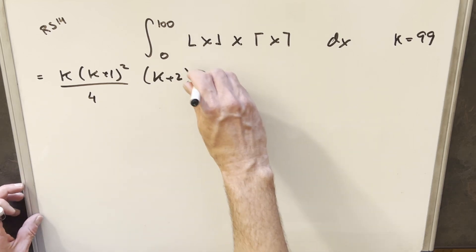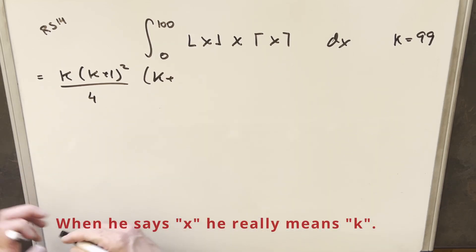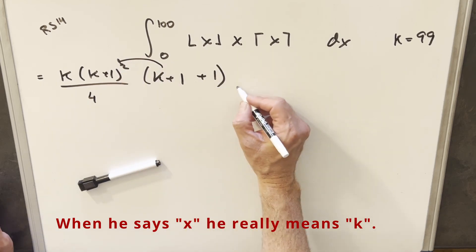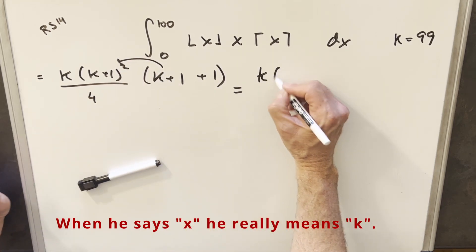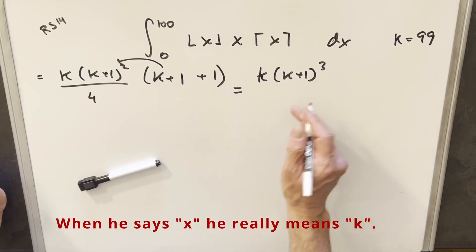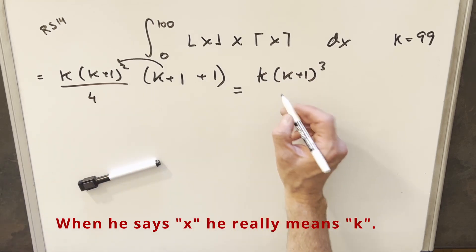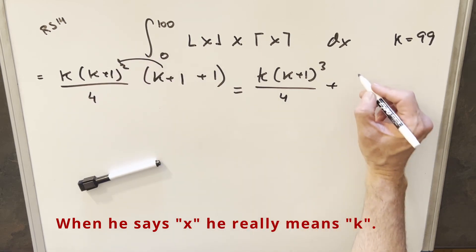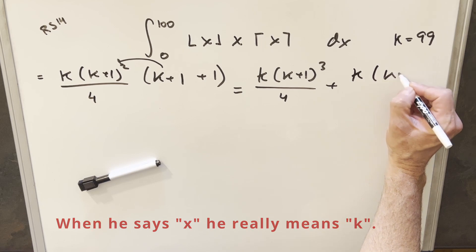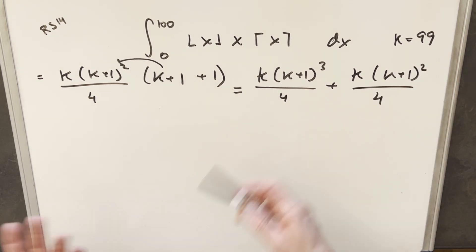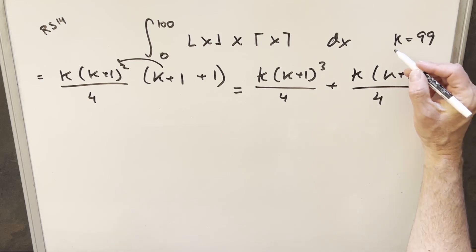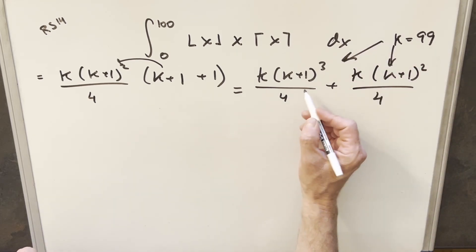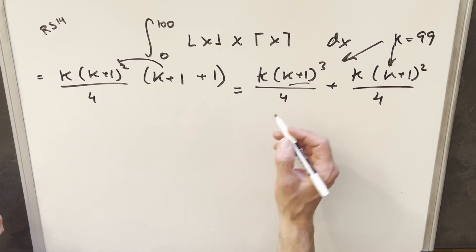To consolidate further, I'm going to write k plus 2 as k plus 1 plus 1 and distribute back. With the k plus 1 factor, I can combine part of this as k plus 1 cubed over 4, and then distribute the 1 to get the remaining term. The nice thing is that when k equals 99, k plus 1 equals 100, which is a clean value to work with.